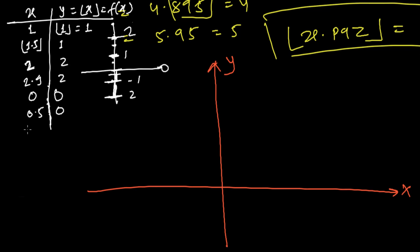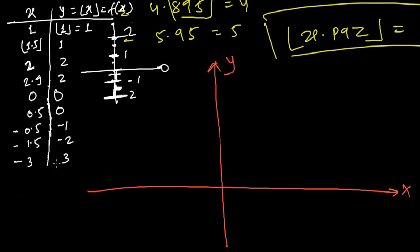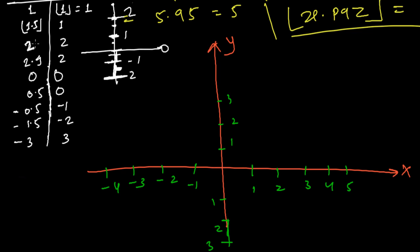Note that for negative numbers, simply chopping off the decimal doesn't work the same way. For example, floor(-1.5) = -2, not -1. And floor(-3) = -3. Let's now plot all these values and see what kind of graph we get.